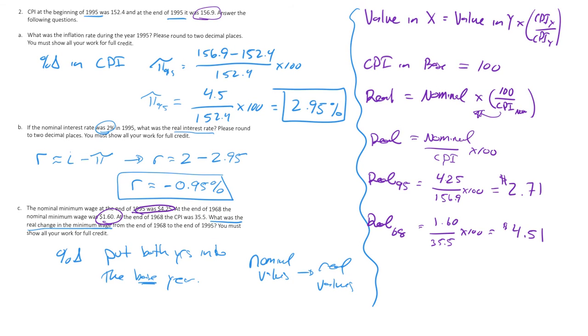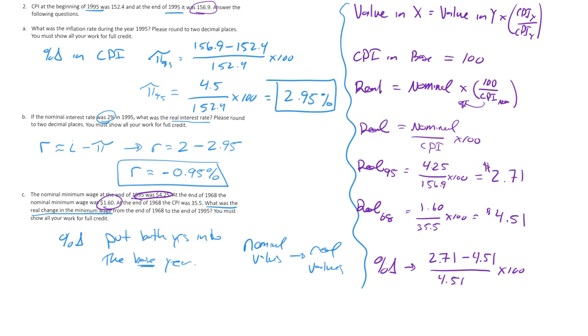I'm going to make this just slightly smaller, so I have slightly more room. So we'll see the second value, our percentage change, our real change, is going to be 2.71 minus 4.51, because it's second minus the first, divided by the first, times that by 100. I'll plug this into the calculator and get negative 39.91%. So that was the real change, the purchasing power change of the minimum wage from 1968 to 1995.